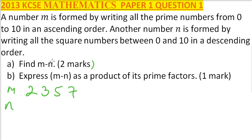n is formed by square numbers in descending order. So it means we have descending, we have 9, we have 4, and we have 1. So we have 941.